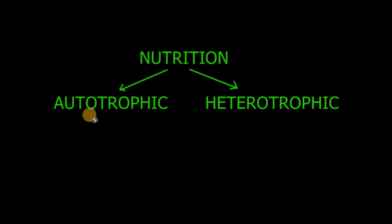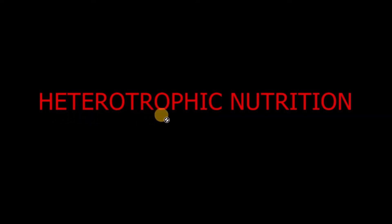Nutrition is basically of two types: autotrophic and heterotrophic. Autotrophic nutrition we have already discussed in detail in our previous video. In this video we are going to discuss heterotrophic nutrition. The kind of nutrition in which an organism cannot prepare its own food, so it has to depend upon some other organism for food. This kind of nutrition is of various types.